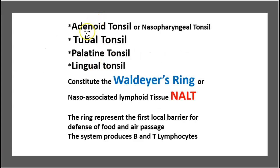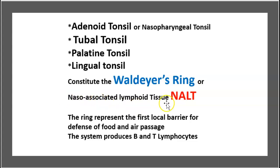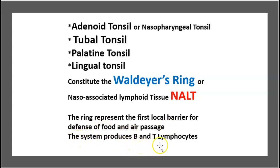The Waldeyer's ring is composed of four parts: the adenoid tonsil, the tubal tonsil, the palatine tonsil, and the lingual tonsil. All of these constitute the Waldeyer's ring, also called the nasal associated lymphoid tissue, or NALT. This ring represents the first local barrier of defense for food and air passage, and it also produces B and T lymphocytes.